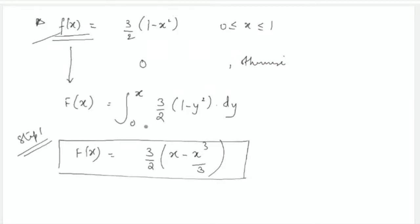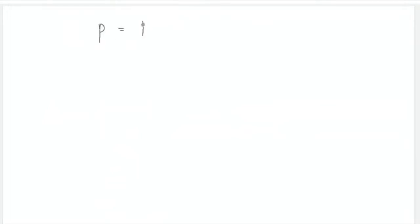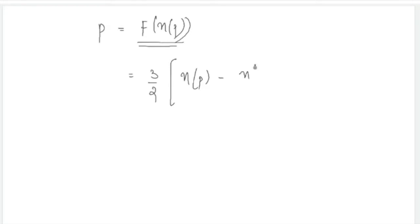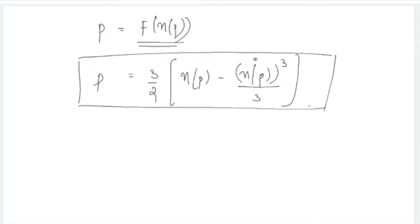So F(x) is the CDF, meaning the probability that X takes a value at most x. Now if you need to find a percentile, use this CDF and state that the 100×p-th percentile of this distribution satisfies: p = F(η_p). You substitute x with η_p in the CDF function.